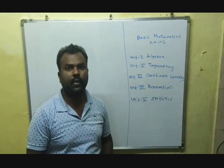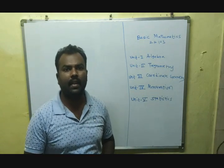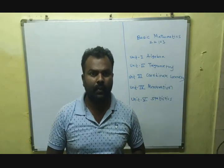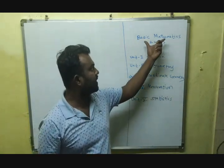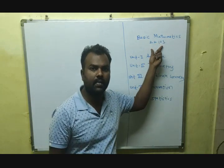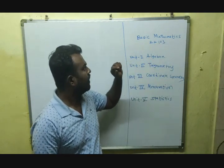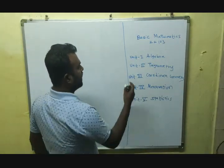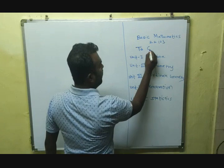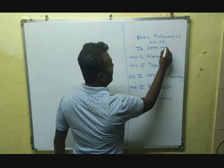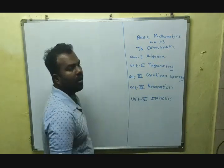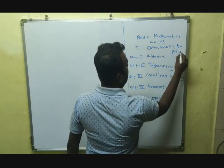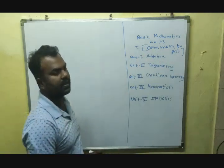Hi students, I am Hirachan Bhoi, lecturer in mathematics at Government Polytechnic College, Solapur. Today we will learn the course Basic Mathematics, which has code 22103. This is for first year diploma engineering. This subject is common for all branches, first year, first semester.